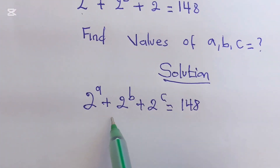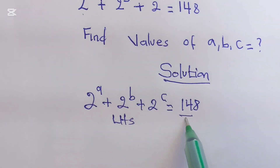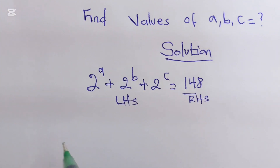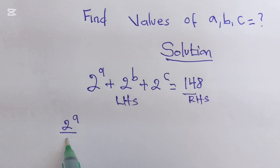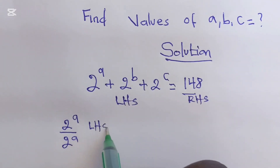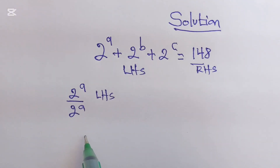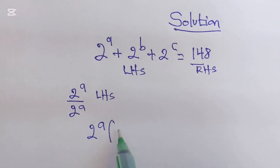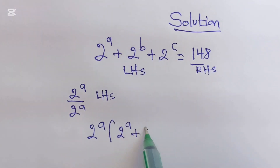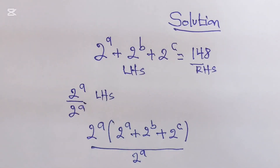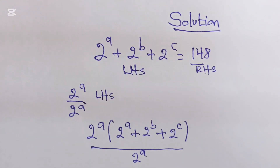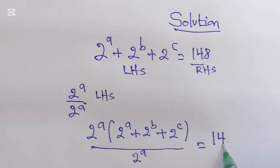We are going to use the left hand side and the right hand side. We are going to divide and multiply 2^A over 2^A on the left hand side, because multiplying by 1 cannot change our answer, which equals 148.